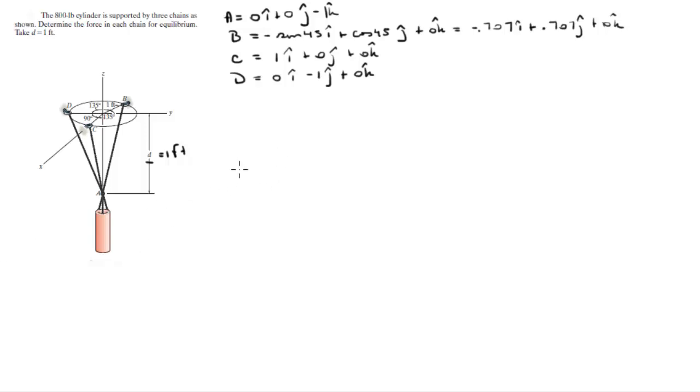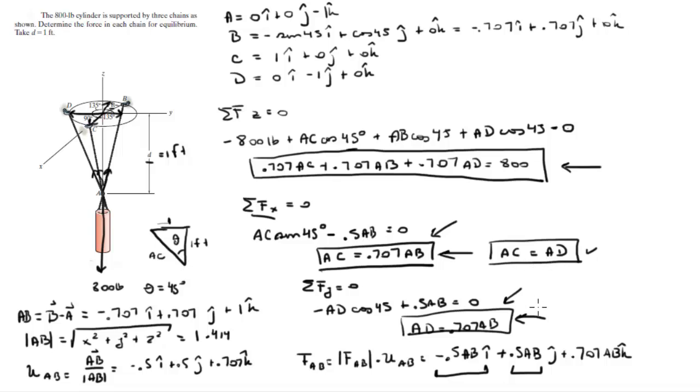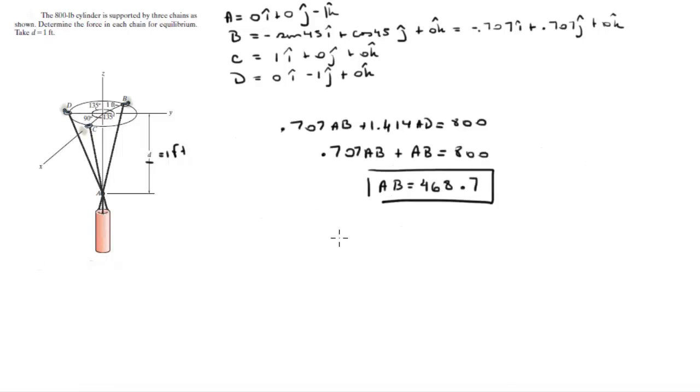Turn the page. And when you do, you get that 0.707 AB plus 1.414 AD is equal to 800, which means that 0.707 AB plus AB is equal to 800, which means that AB is equal to 468.7. And if you plug that into the other formulas, you can find AC and AD, which is equal to AC, comes out to be 331.3 pounds.